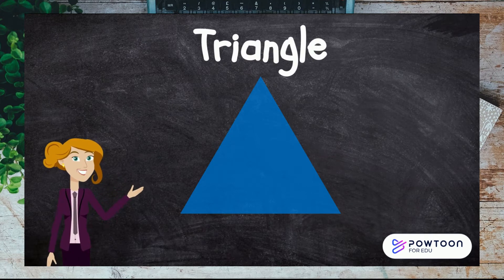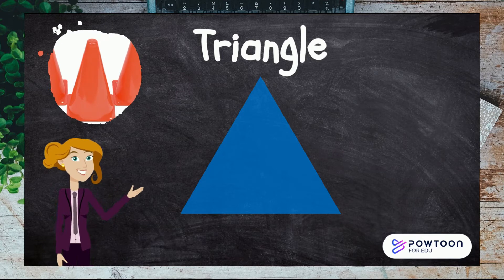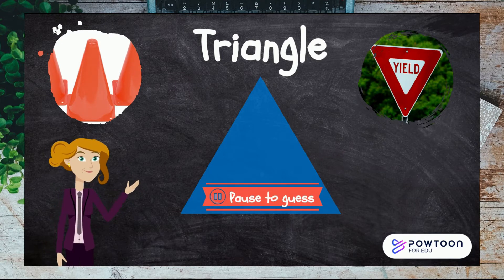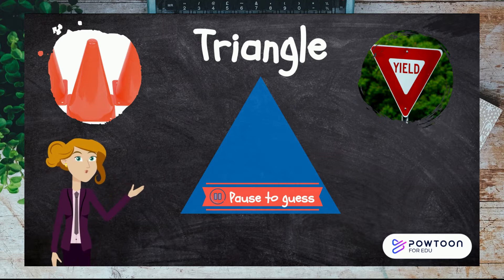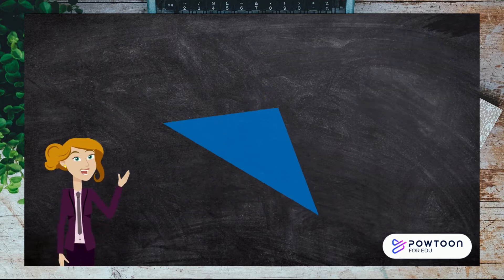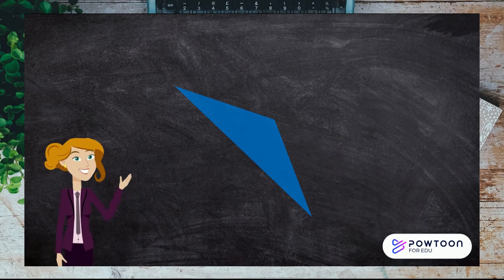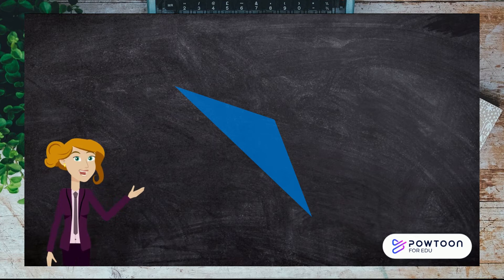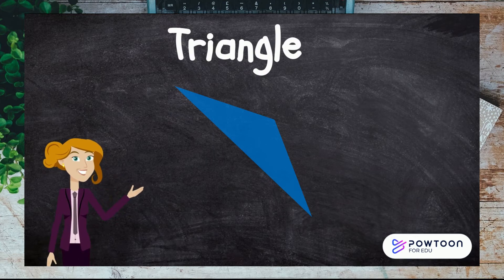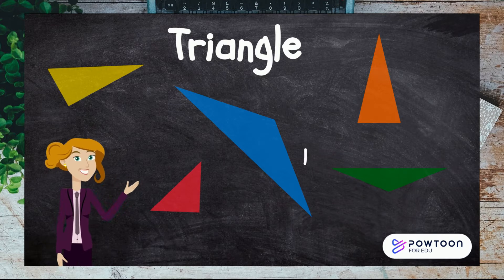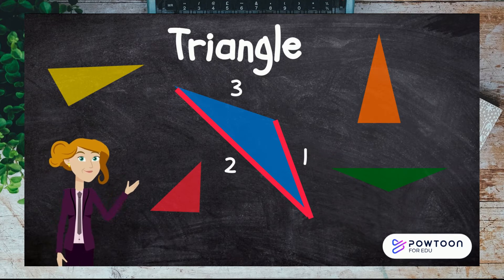We can find triangles everywhere. Can you think of any objects that are triangles? Oh no, our triangle has been squashed. Does this change the name like it did the circle? No. Triangles are always triangles regardless of whether they are squashed. They just need to have one, two, three sides.